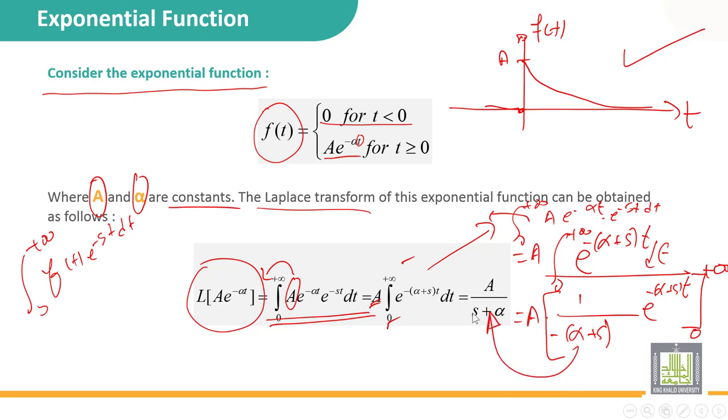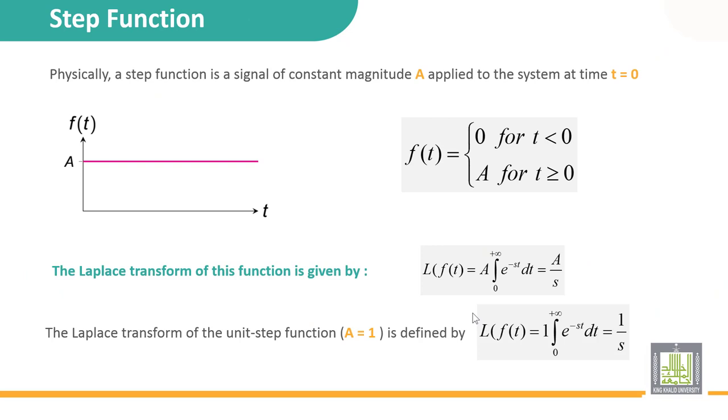Now we will talk about the step function. The step function is given by this equation: f(t) equal to 0 for t negative, and A if t positive, like this exactly.